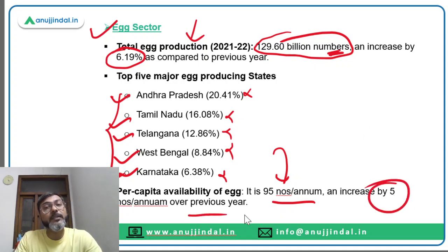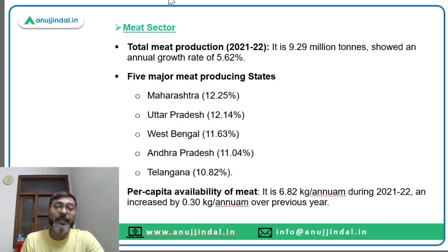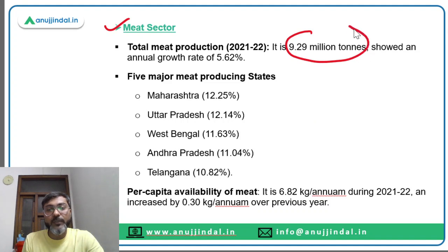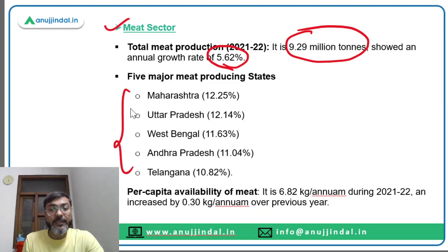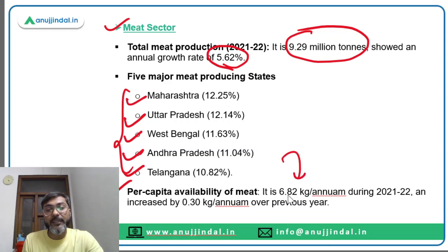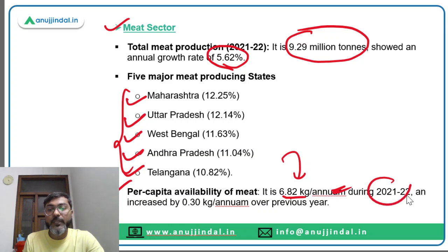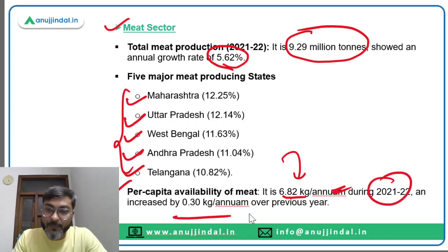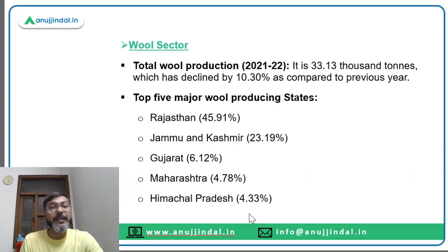Talking about the meat sector: total meat production is 9.29 million tons, an increase of 5.62 percent. The top five meat producing states are Maharashtra, Uttar Pradesh, West Bengal, Andhra Pradesh and Telangana. Per capita availability of meat is 6.82 kg per annum during 2021-22, an increase of 0.30 kg per annum.